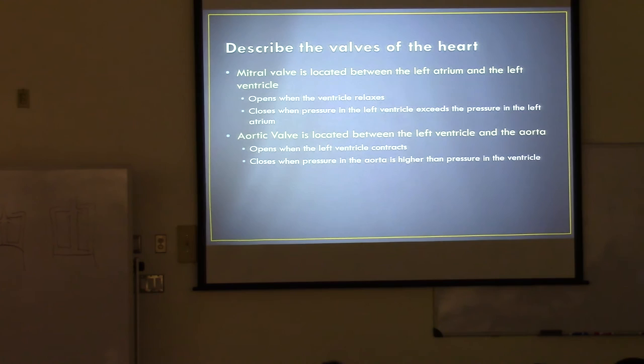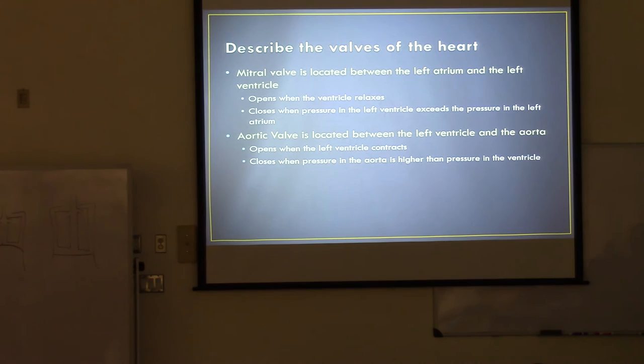The mitral valve is located between the left atrium and the left ventricle — this is also called the bicuspid valve. In anatomy class it's called the bicuspid valve, but working in the open heart unit you'll hear 'mitral valve replacement.' It's called the mitral valve at the bedside. So bicuspid, mitral valve — it's the valve between the left atrium and the left ventricle.